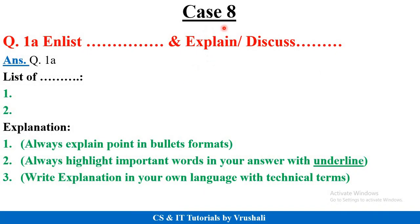Suppose the question is 'enlist and explain.' Enlist means you have to just list down — for example, 'enlist types of queue data structure': circular queue, priority queue, and so on. Just list them down. Then for the explain part, give proper and detailed explanation in bullets format and highlight the important words.